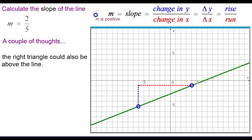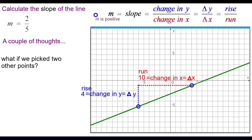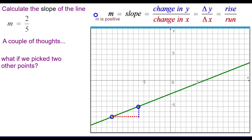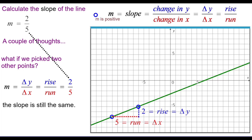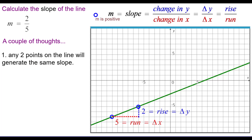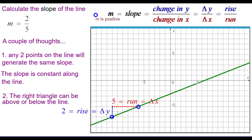A couple of thoughts here. We could have drawn the right triangle above the line, and the slope would still be the same — 4 over 10 or 2 over 5. If we pick two other points on the line, the change in y would be 2, the change in x would be 5, and we get 2 fifths again. Any two points on the line will generate the same slope — the slope is constant along the line. The right triangle can be above or below the line; either way, you get the same slope.